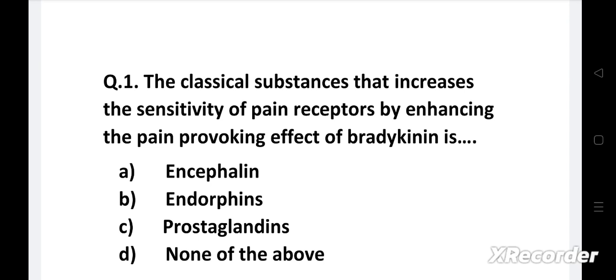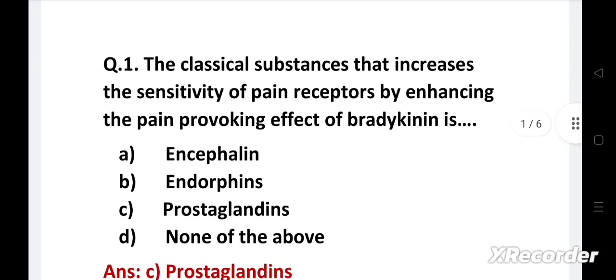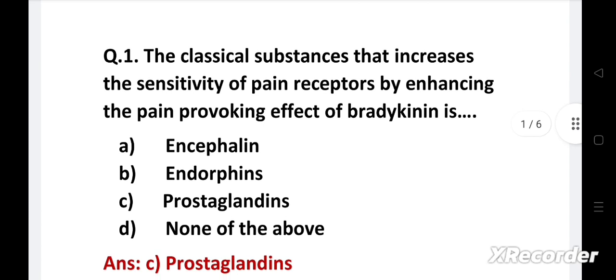Right answer is Option C - Prostaglandins. High levels of prostaglandins are produced in response to injury or infection and cause inflammation which is associated with the symptoms of redness, swelling, pain and fever. This is an important part of the body's normal healing process. In contrast, endorphins cause analgesic effect.